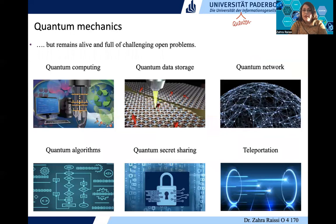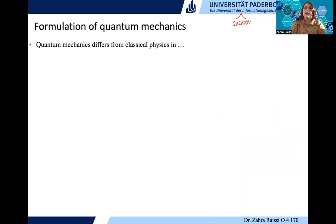Open problems like quantum computing, data storage, quantum network, quantum algorithms, secret sharing, teleportation, and so on. Whenever we talk about quantum mechanics, we should also compare it with classical mechanics to see why we expect to have more advantage whenever we use quantum devices.